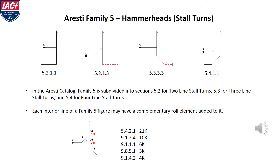Aresti Family 5 contains hammerheads, or stall turns. Here we have four examples of different variations of Family 5 figures. Family 5 is subdivided into section 5.2 for two-line stall turns, 5.3 for three-line stall turns, and 5.4 for four-line stall turns. The vertical up and vertical down line are shown as one continuous line in the Aresti figure. Each interior line of a Family 5 figure may have a complementary roll element added to it, and the example here has a roll on each of the lines that compose the base figure.